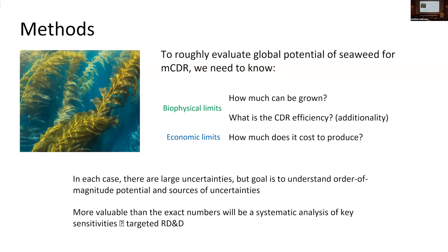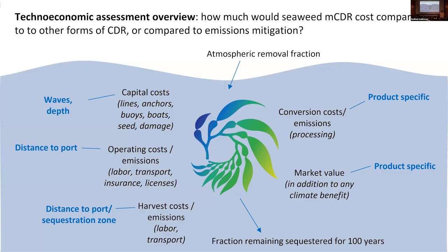A rough outline of our methods: to evaluate the potential, we need to know how much seaweed you can grow — using a dynamic seaweed growth model on a global scale. Second, what is the CDR efficiency or additionality? Third, how much does it cost to produce? In each case we discovered there are huge sources of uncertainty. We wanted to understand the order-of-magnitude potential to see if it was worth investigating at this scale in the first place and identify those sources of uncertainty for future work.